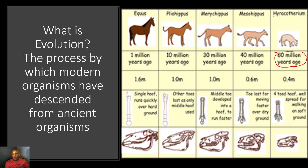Going back to 60 million years ago, we have the Eohippus, which had a four-toed hoof spread out for walking on soft ground. At 40 million years ago with the Mesohippus, the toes came in closer together for moving faster over dry ground. Then at 30 million years ago, the Merychippus developed a larger, thicker middle toe to run faster, with the outside toes moving in even closer.